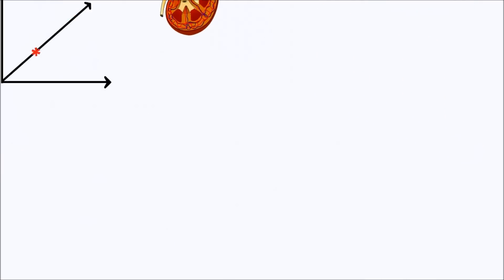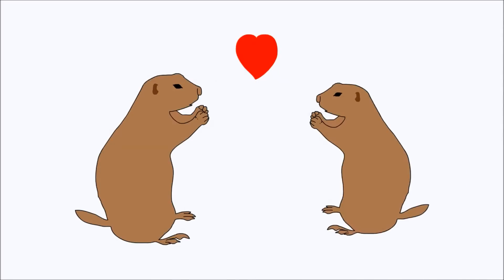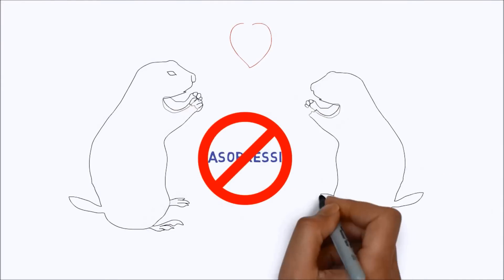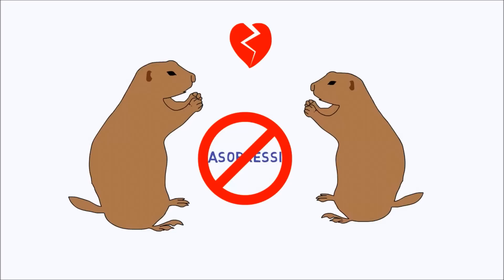When male prairie voles were given a drug that suppresses the effect of vasopressin, the bond with their partner deteriorated immediately as they lost their devotion and failed to protect their partner from new suitors. So, that's all about chemistry behind love.